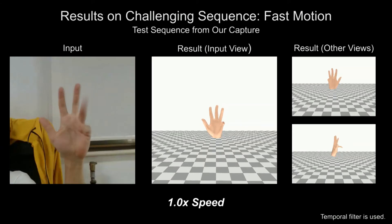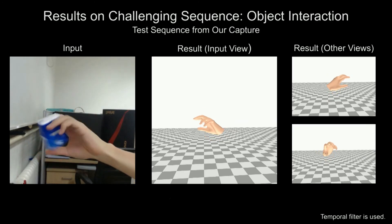Utilizing the prior knowledge learned by the IKNet from the mocap data, our system is robust to heavy motion blur and complex hand-object interactions.